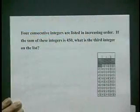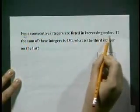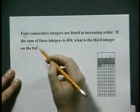Let's read it. Four consecutive integers are listed in increasing order. If the sum of these integers is 450, what is the third integer on the list? One of my key ideas for saving time while you're taking the test is, once you're reading the question the first time, circle whatever they're telling you to find. So let's go back to the question and read it. Four consecutive integers are listed in increasing order. If the sum, that means add, so I'm going to either write add or put a little plus sign, of these integers is 450. What is the third integer? That's what I'm trying to find.